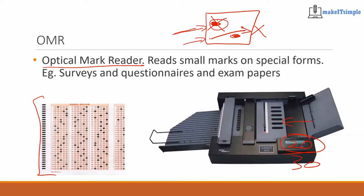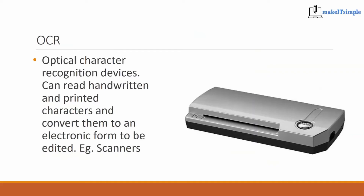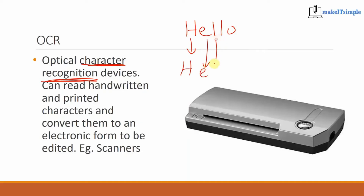Optical Mark Reader looks for marks on the paper. OCR stands for Optical Character Recognition. That is like when you take your handwriting — for example writing 'hello' — and the computer will recognize: that is an H, that is an E, that is an L, that is an L, and that is an O.